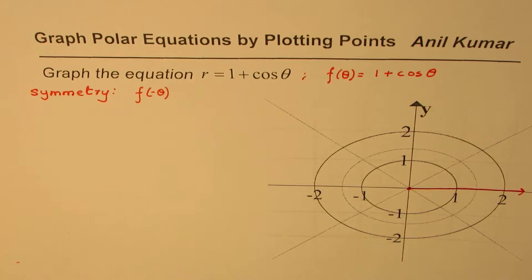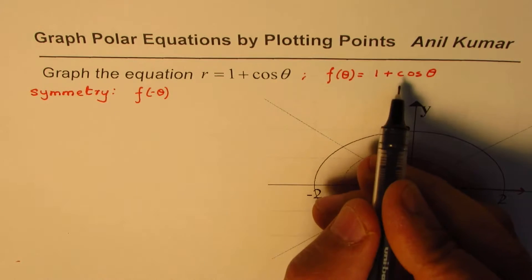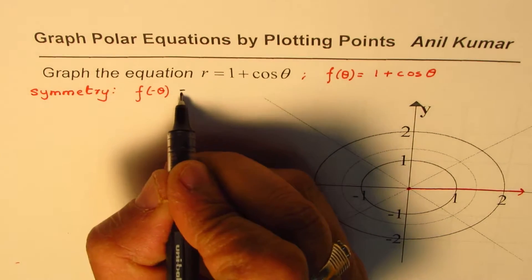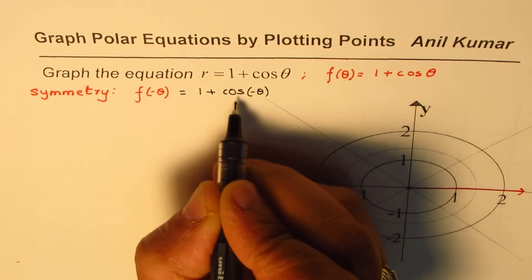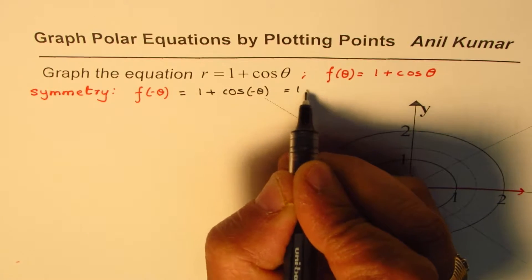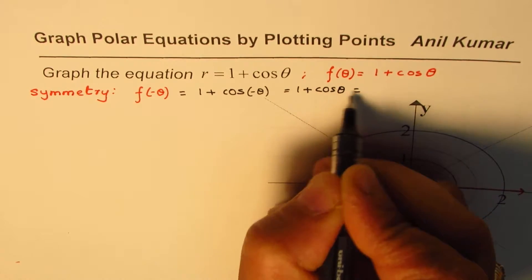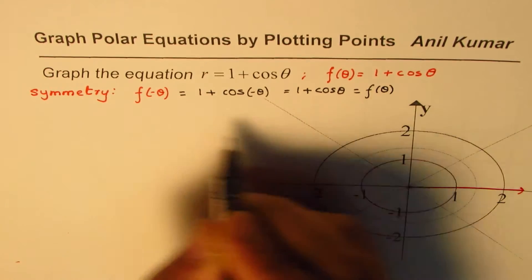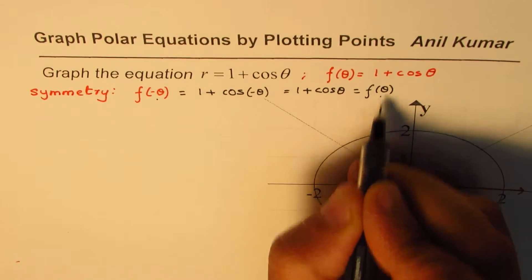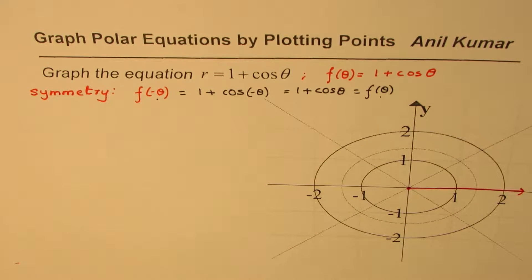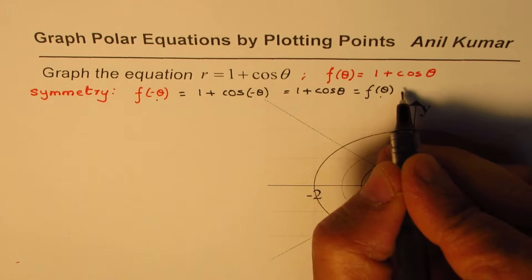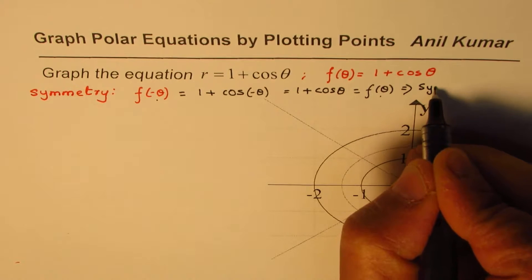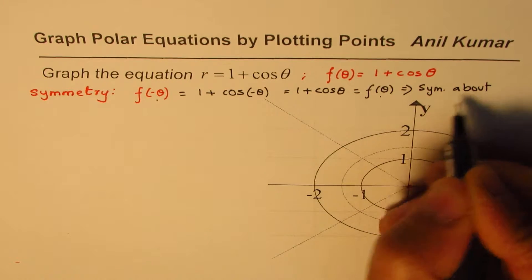Let's try it out. What is f of minus theta in this case? We'll replace theta with minus theta. So f of minus theta equals 1 plus cos of minus theta. Since cosine is even, cos of minus theta equals cos theta, so it can be written as 1 plus cos theta, which is exactly f of theta. So we have f of minus theta equals f of theta, which really means that this particular function is symmetric about the polar axis.